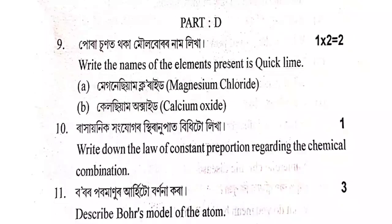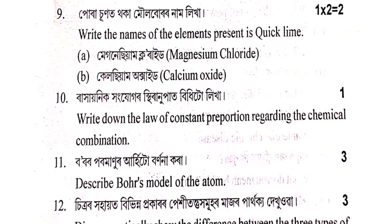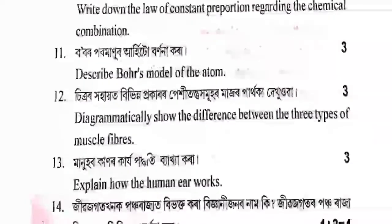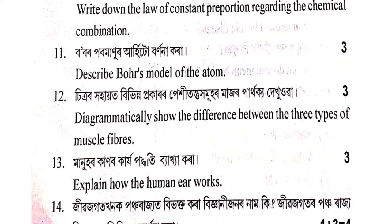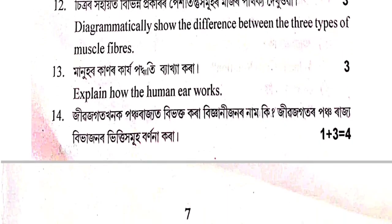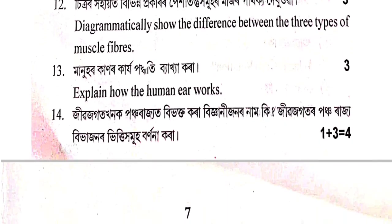Bharalot mazut rakha — hoishor keneda re khyoti hadan hoi — how do storage grain losses occur? Pura suno thaka moloburor naam likha — write the names of elements present in quicklime. Rakhainik honguzan-or sthiranu pat bidhitu likha — write down the law of constant proportions regarding chemical combination. Boror pura manor arhitu banana kora — describe Bohr's model of the atom. Diagramatically show the differences between the three types of muscle fibres.